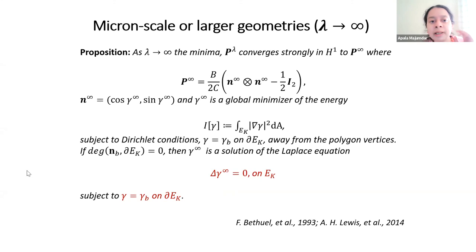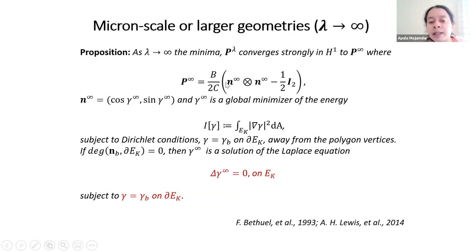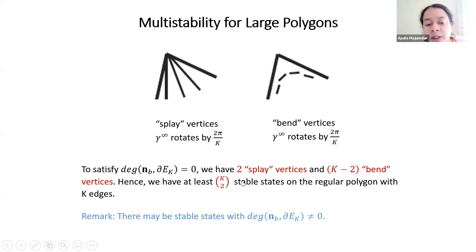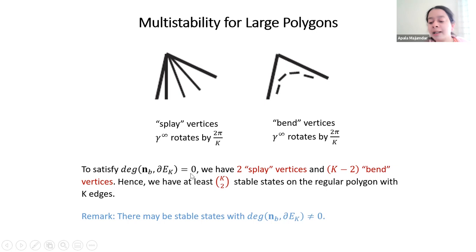As λ becomes very large, we no longer get these interior defects — instead you have almost constant ordering in the interior. The profile n_∞ is fully described by an angle that is a solution of Laplace's equation subject to prescribed Dirichlet boundary conditions. Using topological arguments, we can show that for a k-regular polygon with k edges, we will have at least k-choose-2 stable states in the λ → ∞ limit. So we have a truly multi-stable two-dimensional system. For a hexagon (k = 6), 6-choose-2 is 15, and for large enough hexagons we will get at least 15 different stable states.